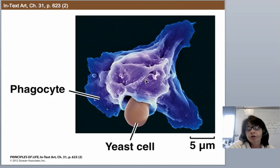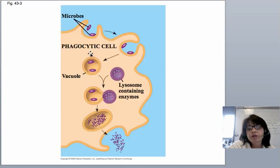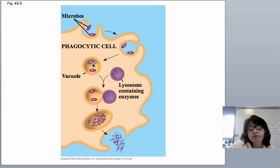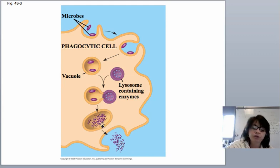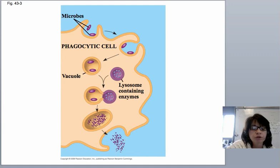There's a cool picture of a phagocyte encompassing and engulfing a yeast cell. When it takes it in — remember endocytosis — phagocytosis is a larger-scale version that brings the pathogen into a vesicle. That vesicle fuses with the lysosome, which has enzymes that chew things up. Then the pieces interact with a molecule called MHC class 2, and the dendritic cell puts those pieces out on its membrane.